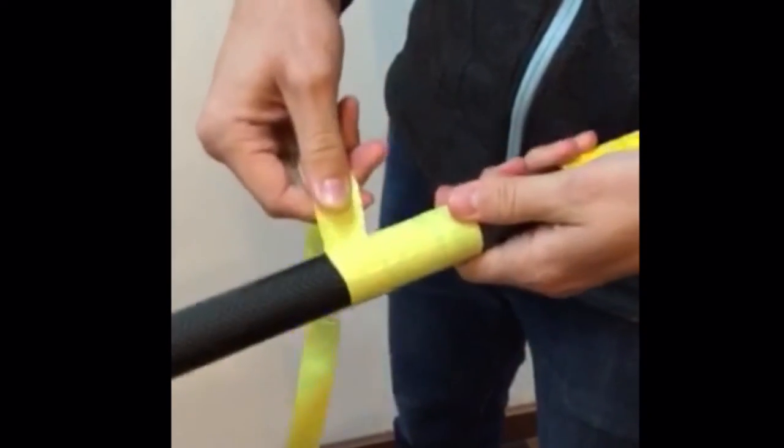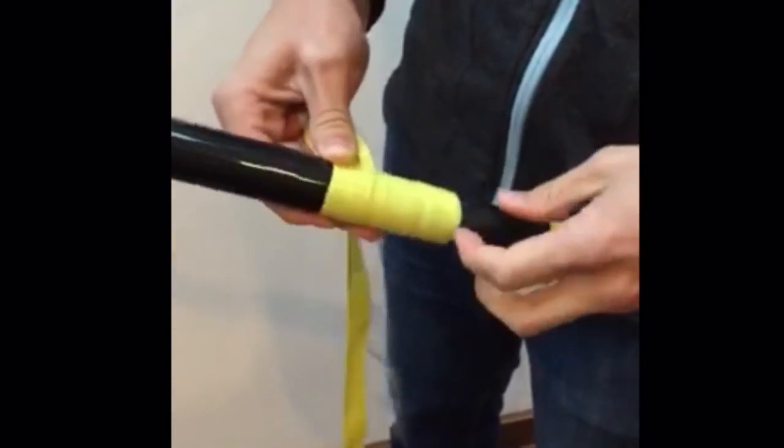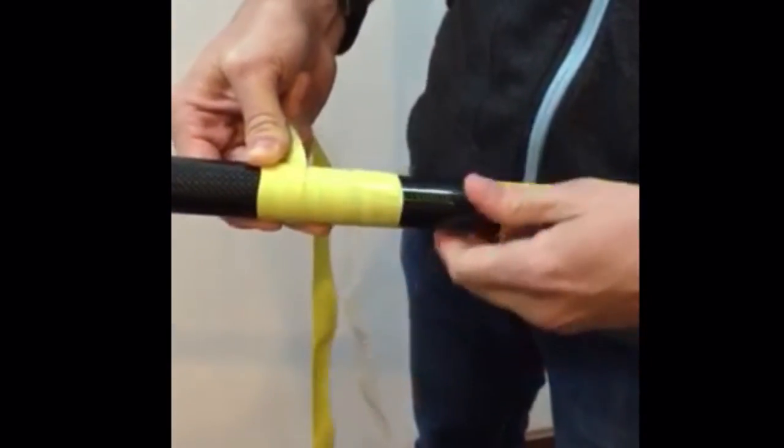And see, it sticks to itself. That's the fusing tape. Some people put electric tape at the bottom and electric tape at the top. That's it.